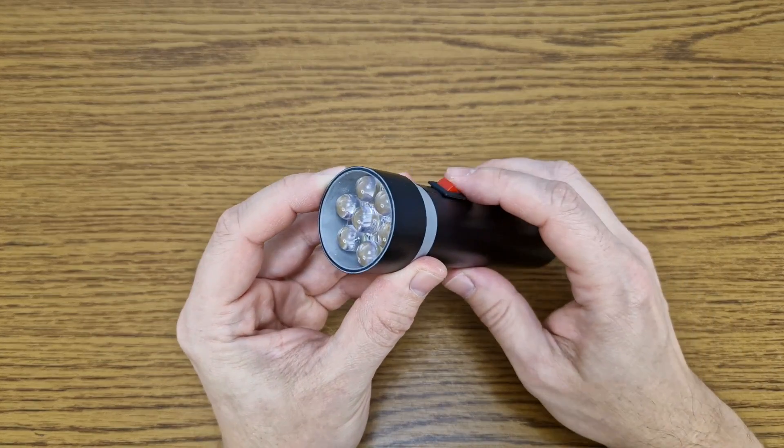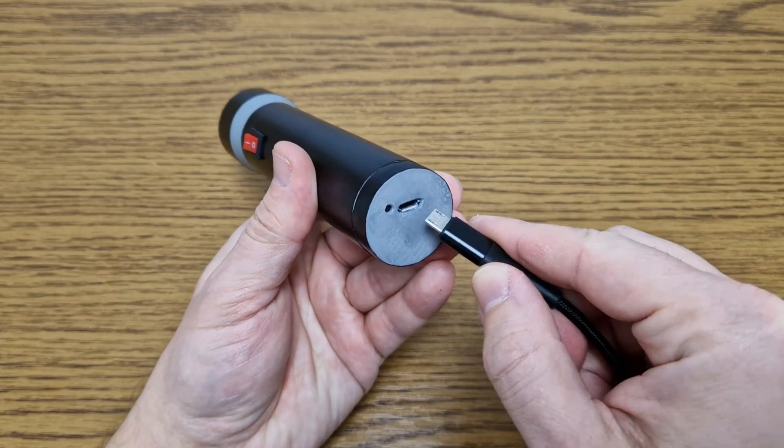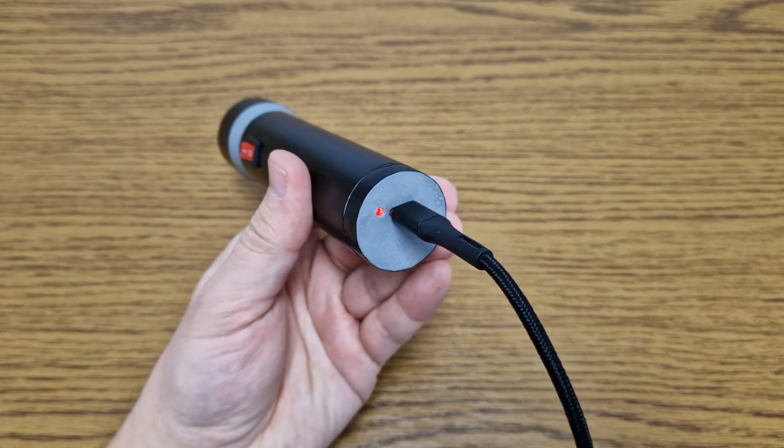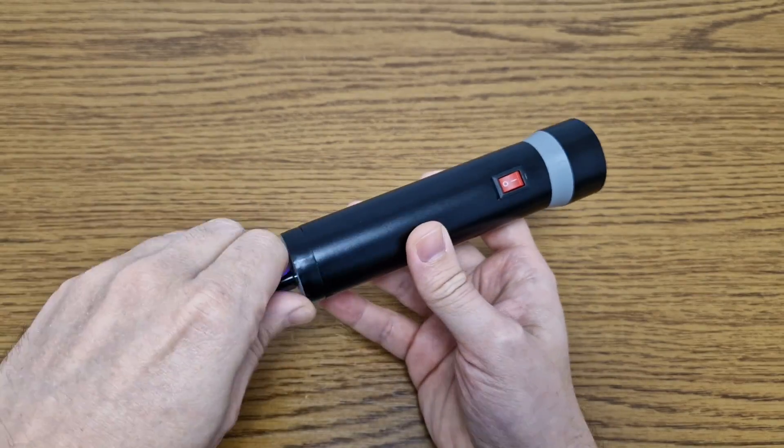And the LED flashlight is finished. It's very small, so you can carry it in your pocket. When you connect the charger, the red LED turns on. It takes about 3 and a half hours to charge it. And when the battery is fully charged, the blue LED turns on.